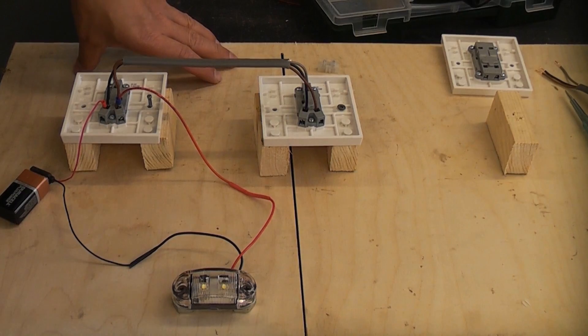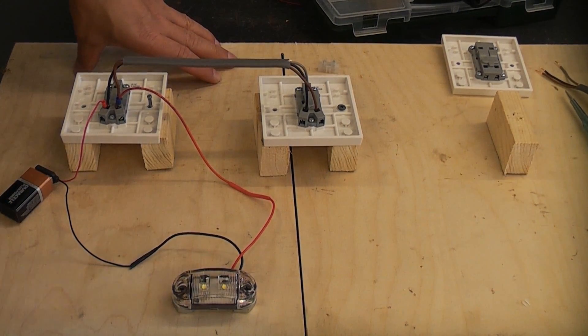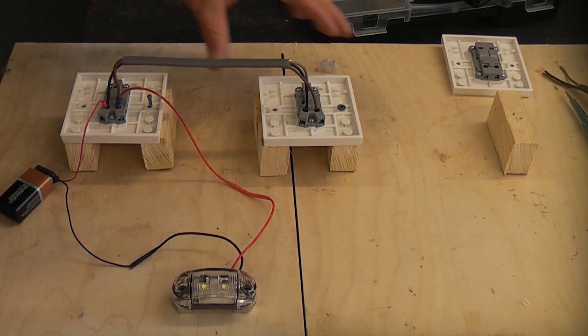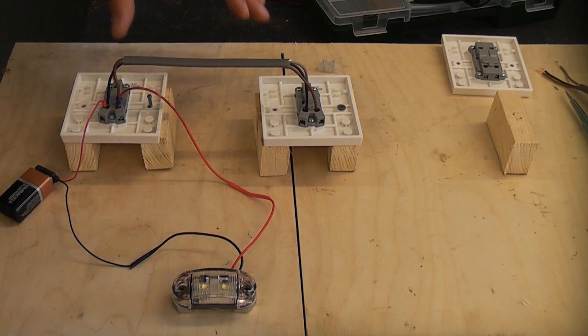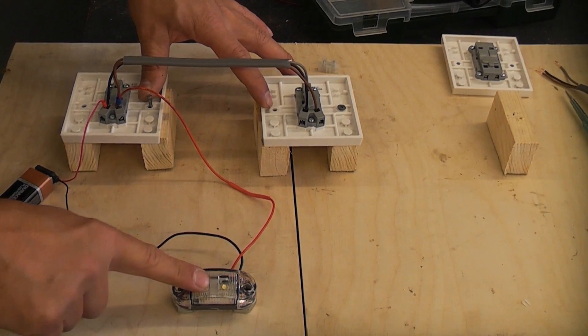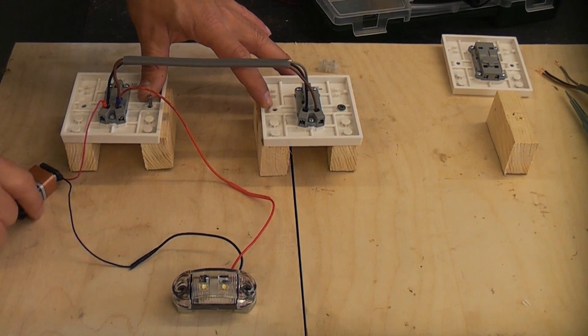Obviously in this scenario I'm just using a lamp and the battery but at home you would use proper switches like this and you will be using mains voltage electric. The principle is exactly the same, the only difference is we're using a low voltage lamp and a battery for the power.